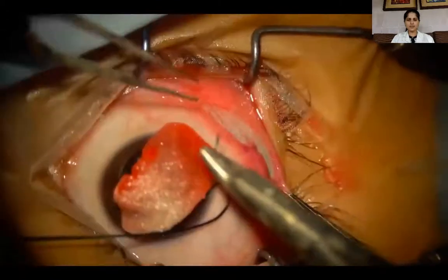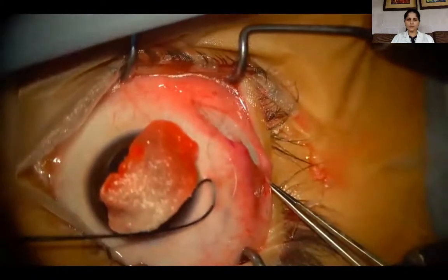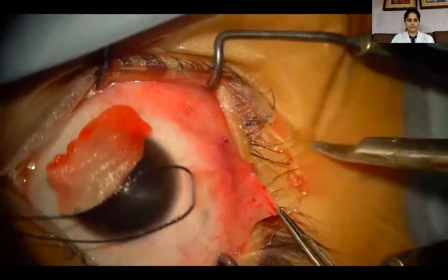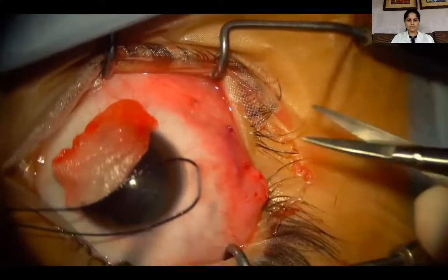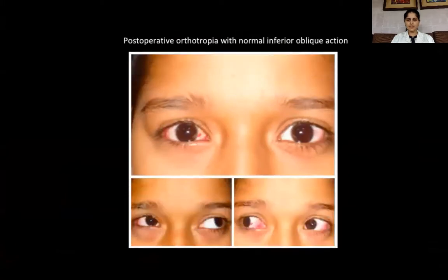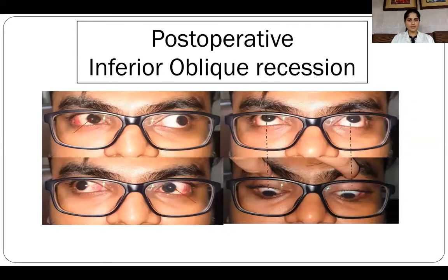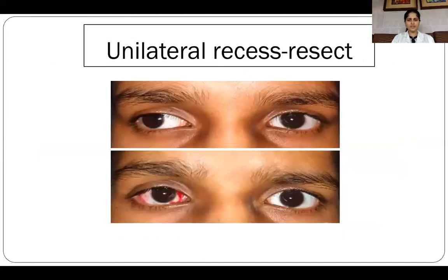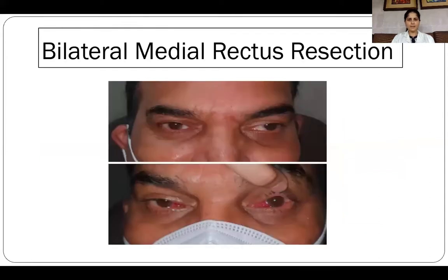The conjunctiva is then closed with 8-0 polyglactin sutures or with glue. Inferior oblique weakening procedures do not affect the horizontal deviation and give good results post-operatively. This procedure reduces the inferior oblique overaction and collapses the V pattern. This technique can be combined with bilateral lateral rectus recession, unilateral recess-resect procedures, and bimedial resections.